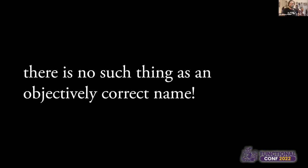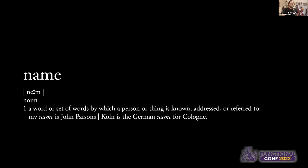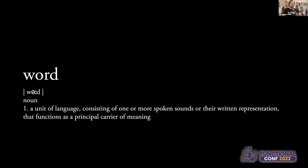There isn't really such a thing as an objectively correct name. It's all subjective. So we should probably define some terms. What is a name? Basically, a name is a word or a set of words by which a person or a thing is known, or how we address or refer to it. And a word is basically just a unit of language which consists of one or more sounds or their written representation, and this functions as a principal carrier of meaning.